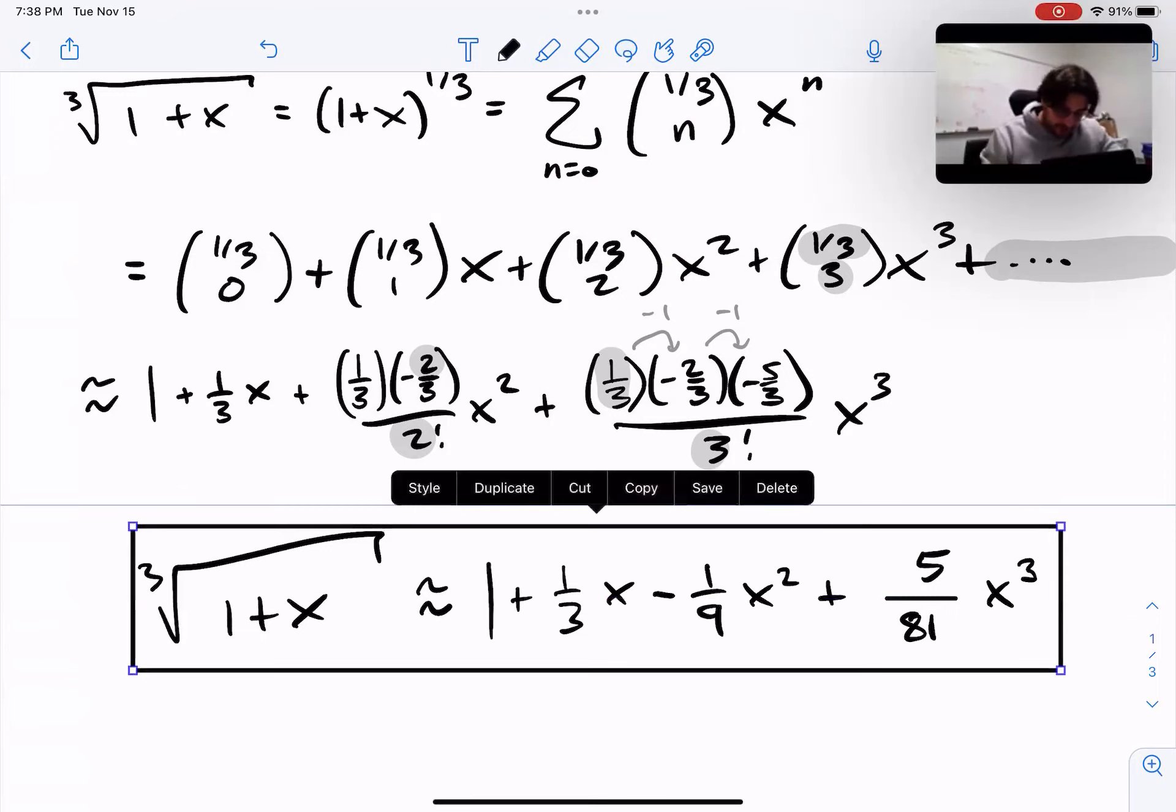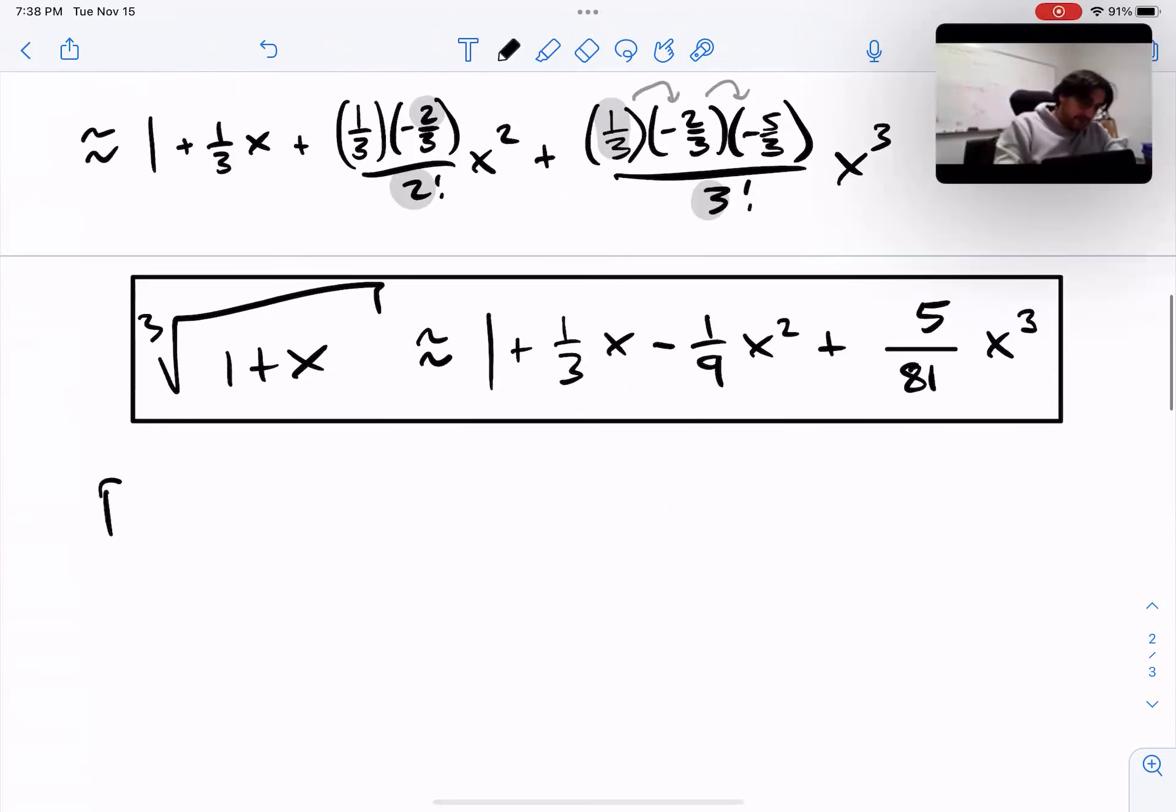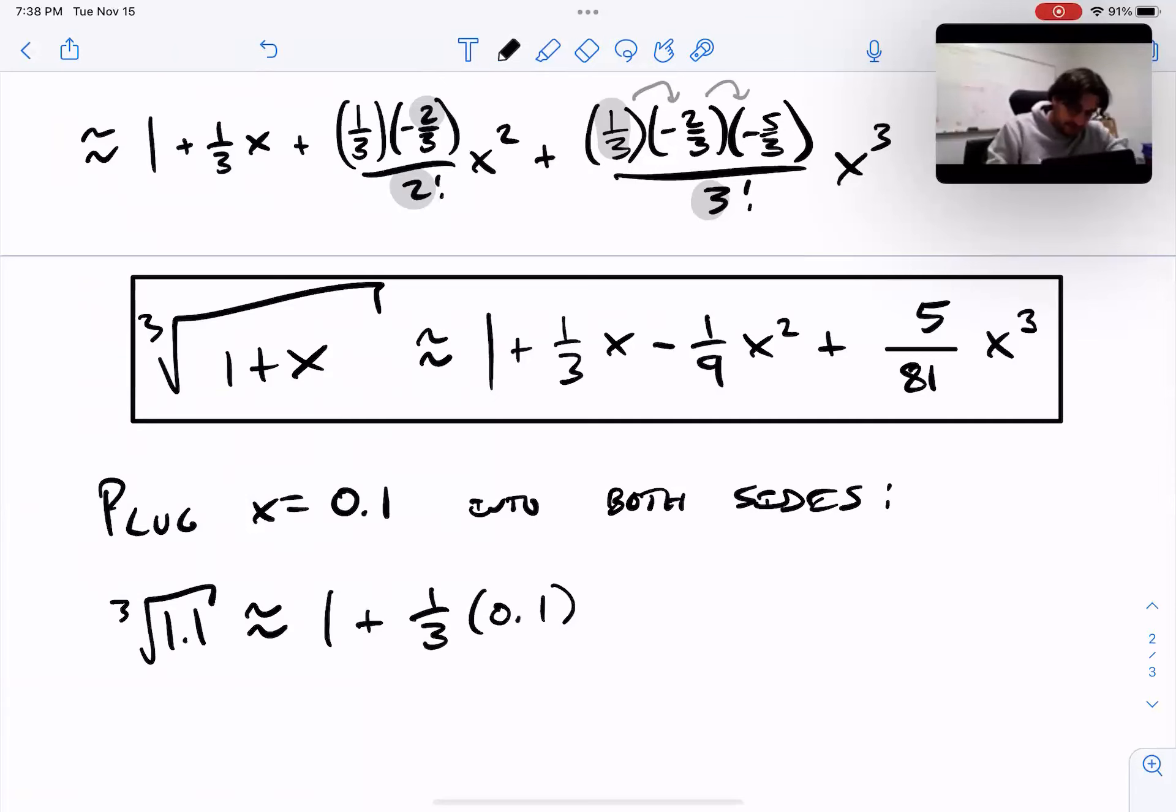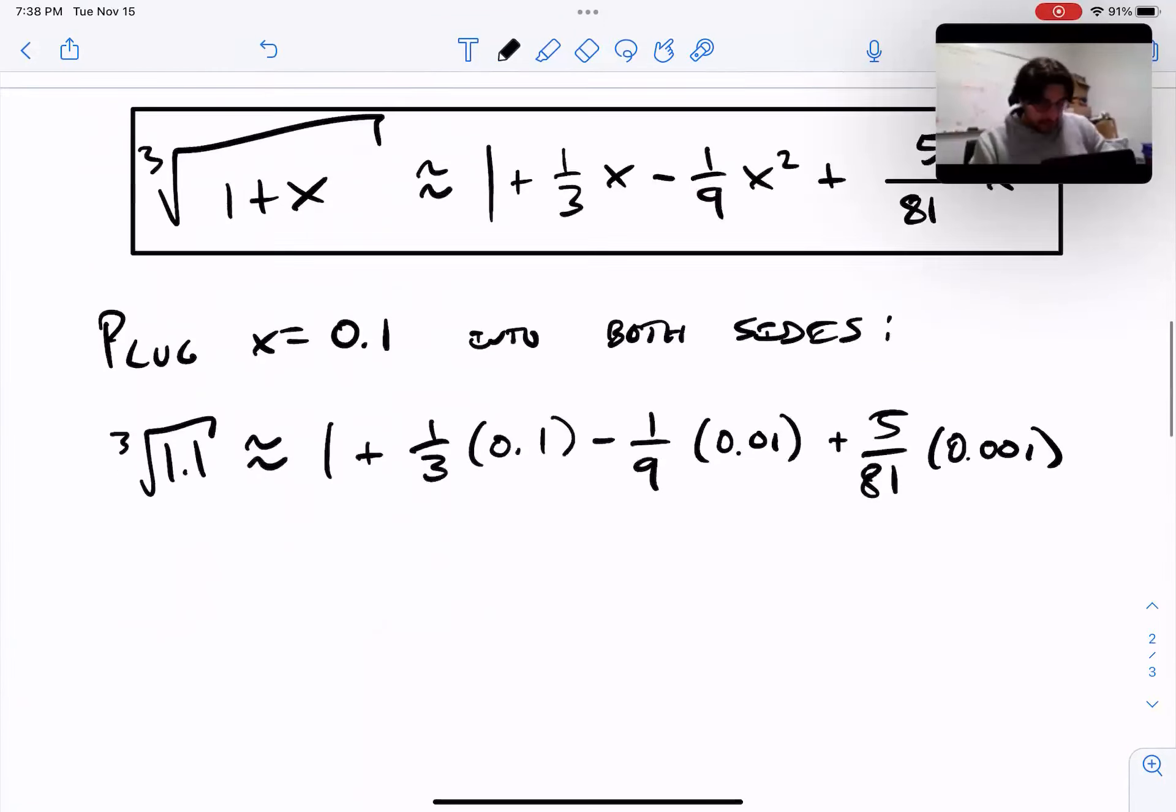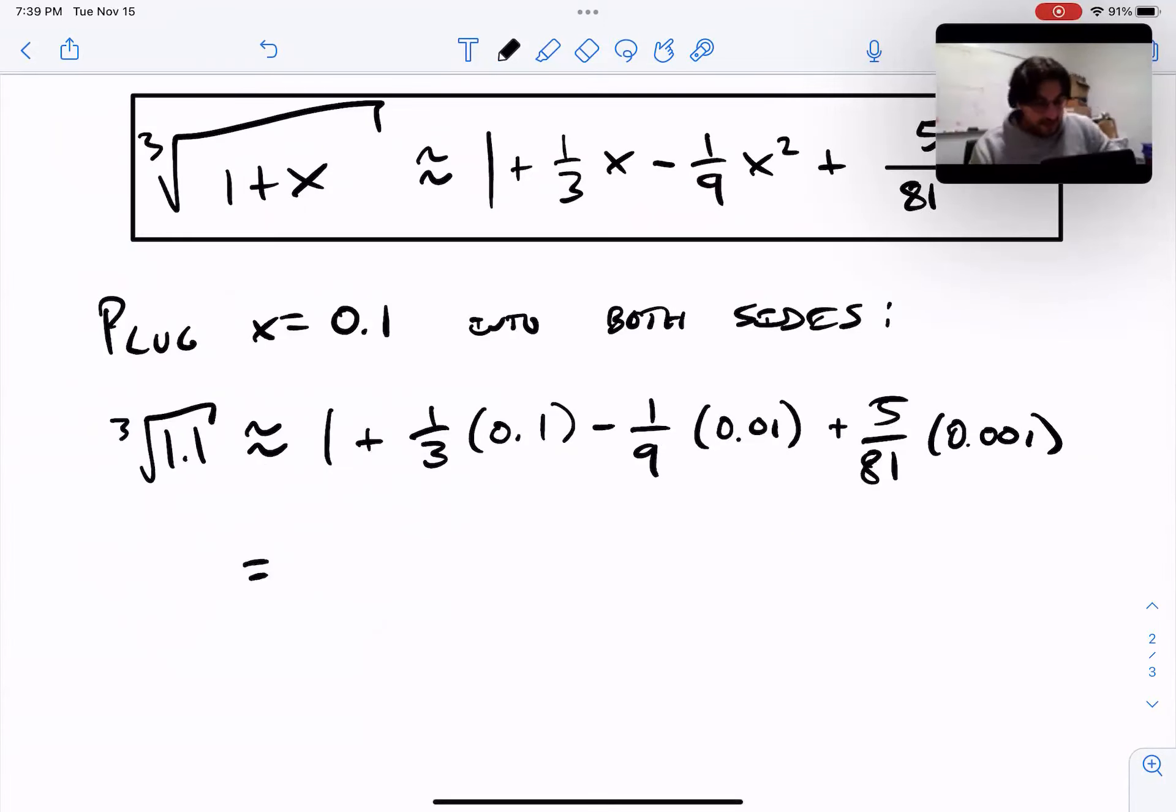And so now you can say, plug x equals 0.1 into both sides, and that will give us an estimate for the number we're looking for. We're looking for the cube root of 1.1. I can plug 0.1 into both sides and I get 1 + (1/3)(0.1) - (1/9)(0.01) + (5/81)(0.001). And if I crunch this out, this will give me a pretty good idea of what the value of cube root of 1.1 is.